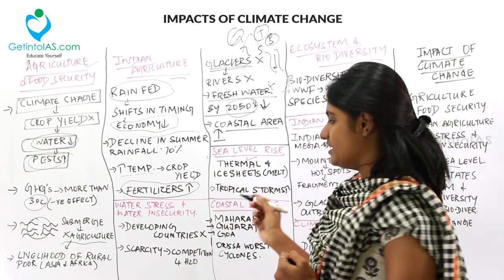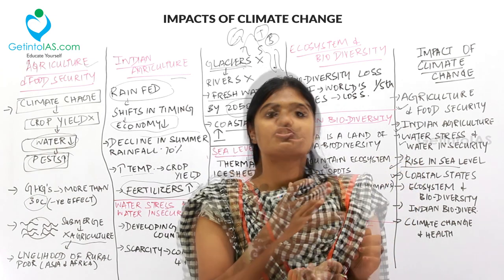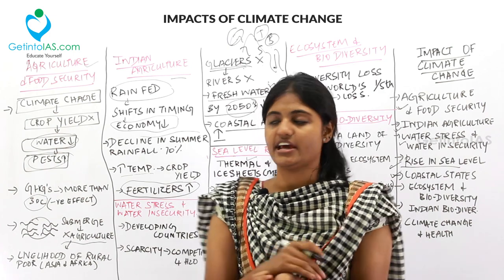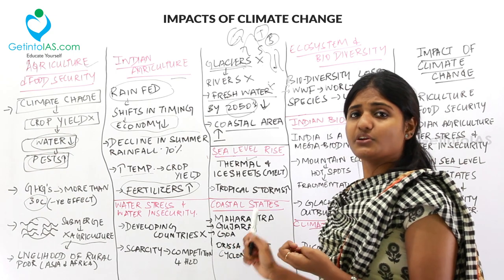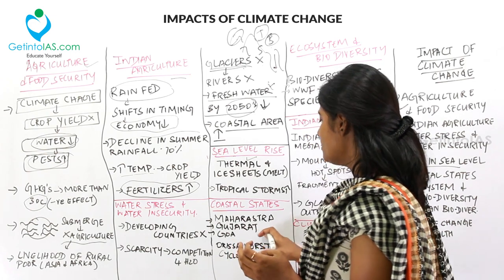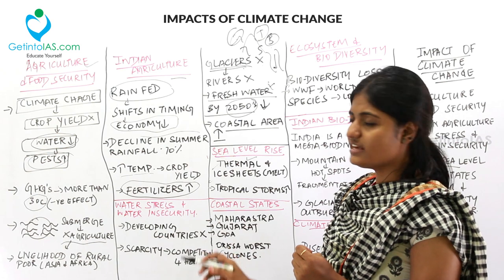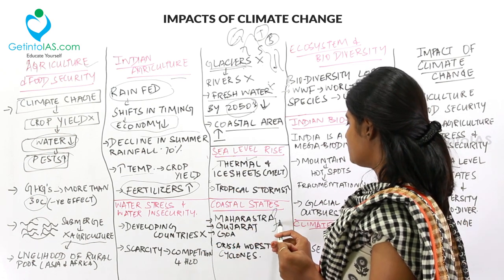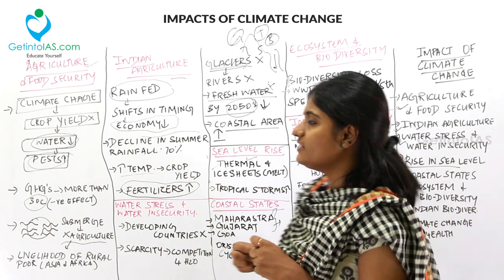Coming to Coastal States. Coastal states are hugely affected by sea level rise. In India, Maharashtra, Gujarat, and Goa are hugely affected by sea level rise due to thermal expansion, while Orissa is vastly affected by cyclones. These correspond to the two causes of sea level rise we discussed.